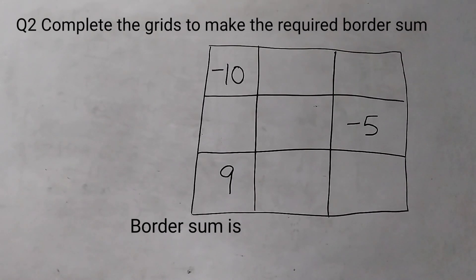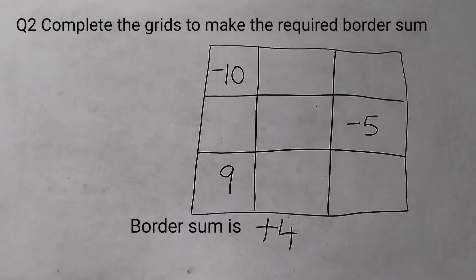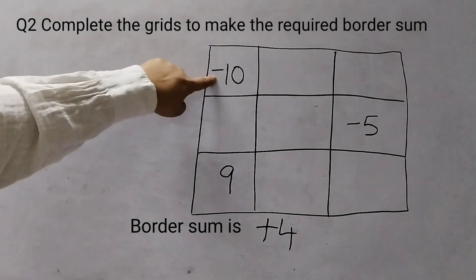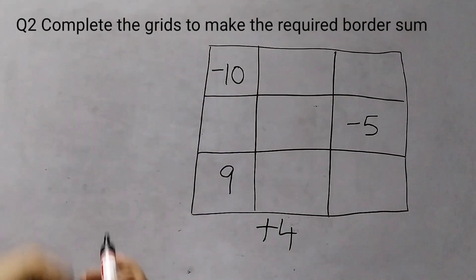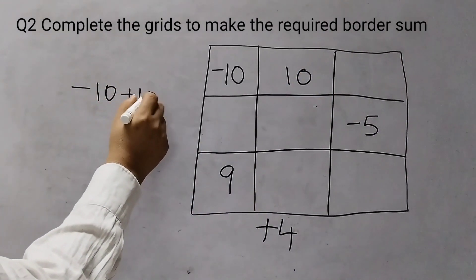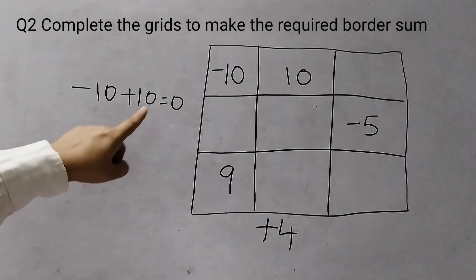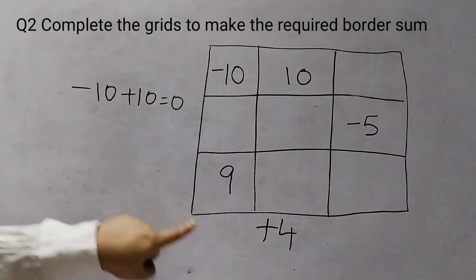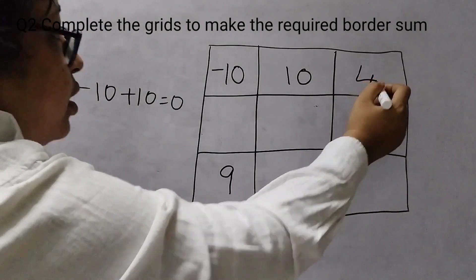This is the first grid and the border sum for this is plus 4. Now let's start with the top row — minus 10 is there. An easy way to do this is to use zeros and opposite numbers. For example, if I put a 10 here, minus 10 plus 10 makes it 0. Now we need plus 4, so we will just add a 4 here.